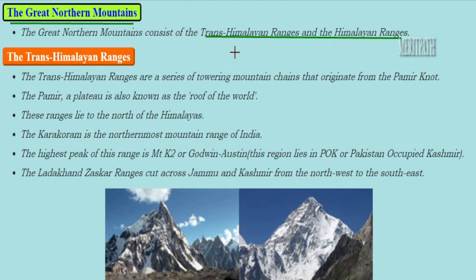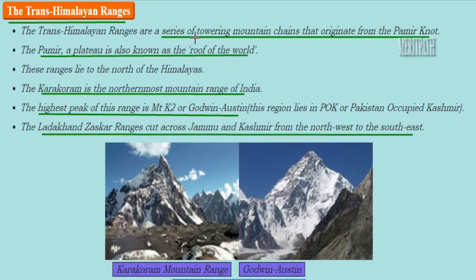The Great Northern Mountains consist of the Trans-Himalayan ranges and the Himalayan ranges. The Trans-Himalayan ranges are a series of towering mountain chains that originate from the Pamir Knot. The Pamir is a plateau known as the 'Roof of the World,' lying to the north of the Himalayas.